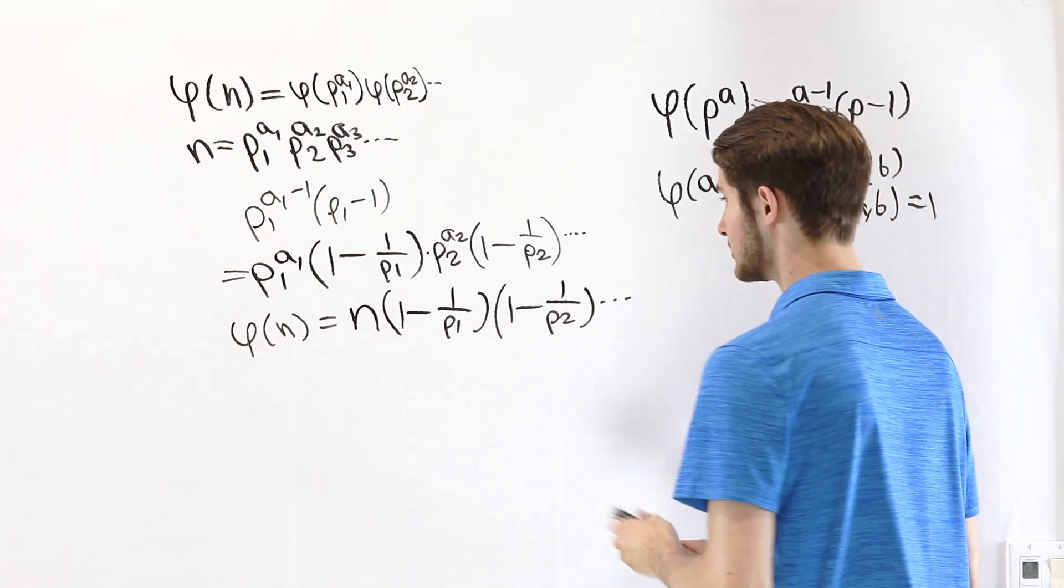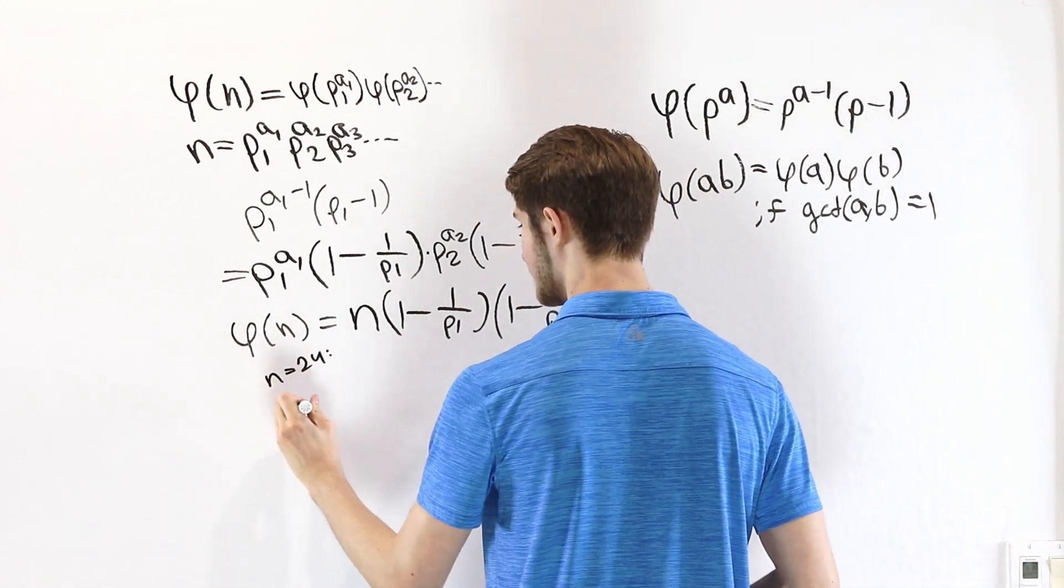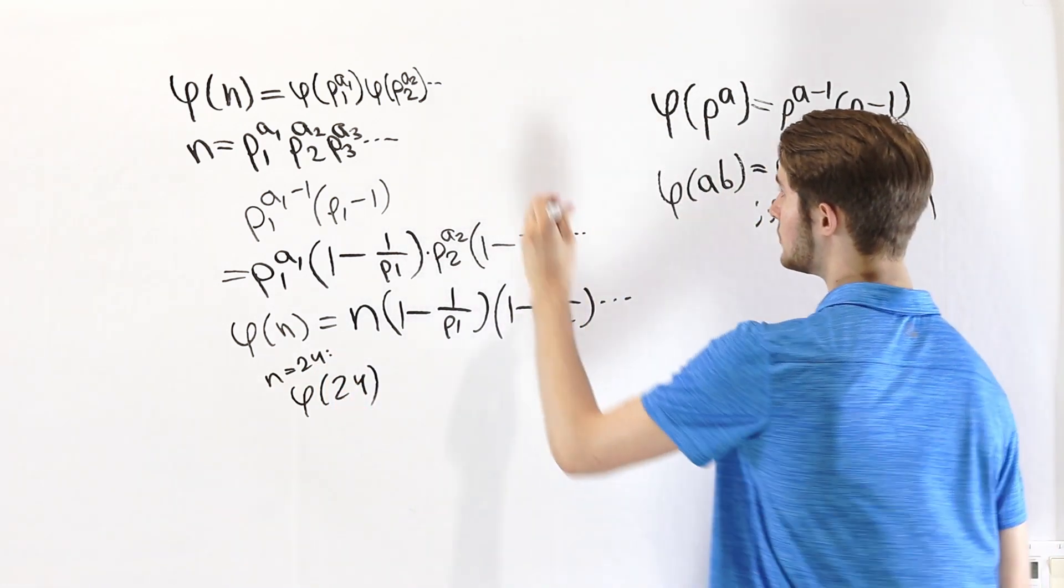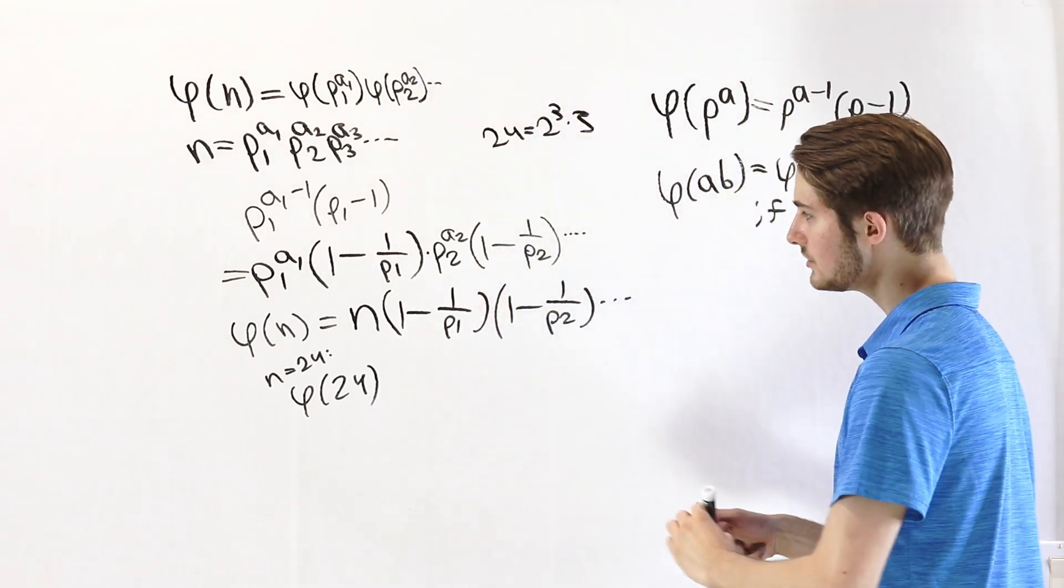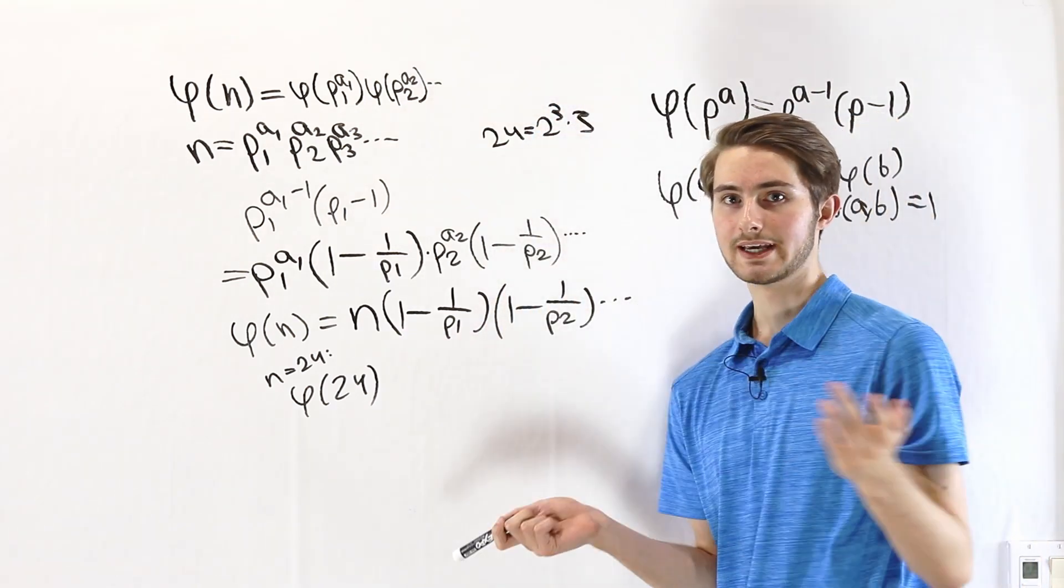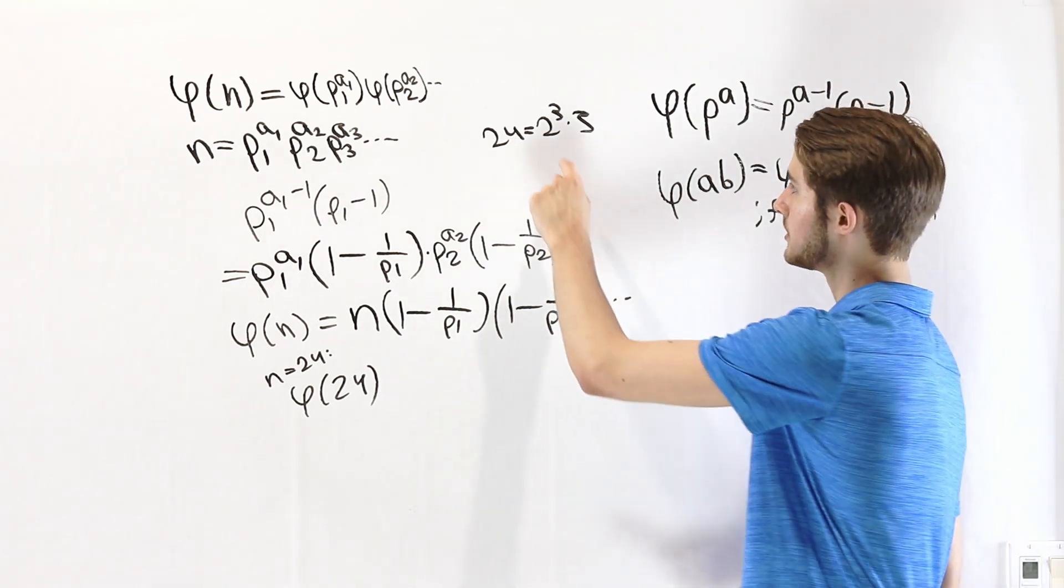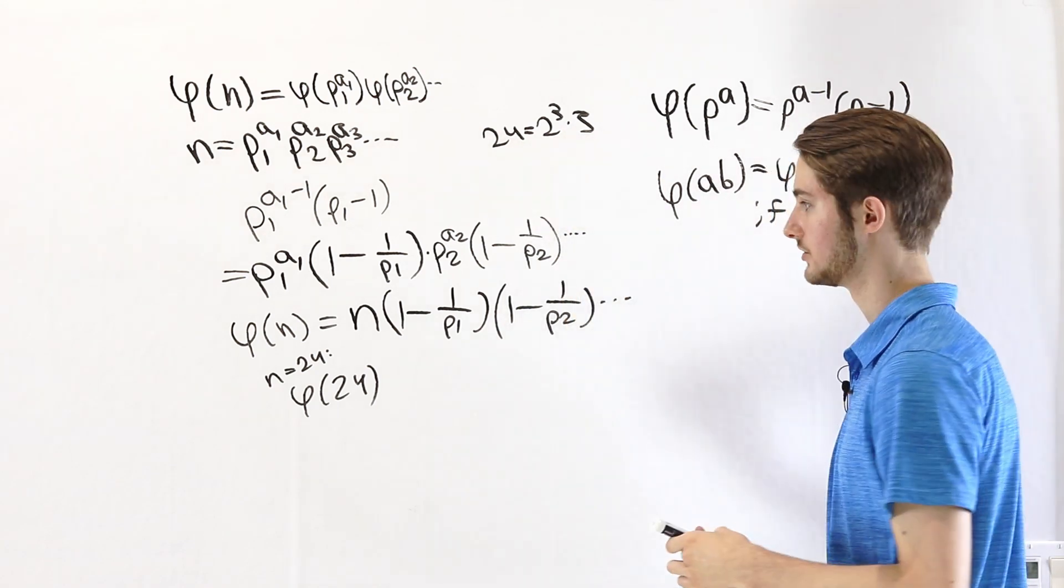So let's look at an example. Like we were doing before, let's say we pick n equals 24. Phi of 24. We know that 24 is equal to 2 cubed times 3. In this formula, notice we don't really care what the power of the prime number is. We just have to know what prime factors there are. In the case of 24, that's 2 and 3.